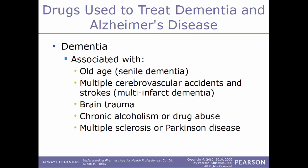Now we'll talk about drugs used to treat dementia and Alzheimer's disease. Dementia is associated with old age (senile dementia), multiple cardiovascular accidents and strokes (multi-infarct dementia), brain trauma, chronic drug use, alcoholism, multiple sclerosis, or Parkinson's disease.